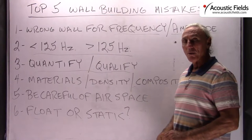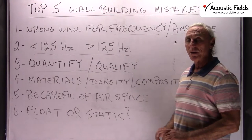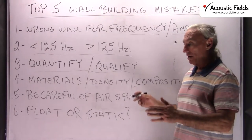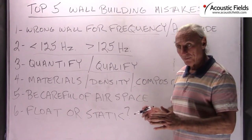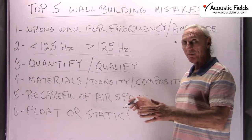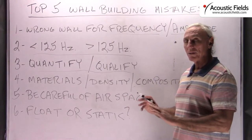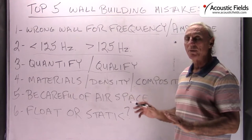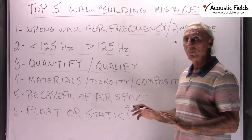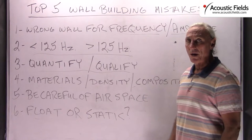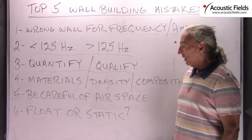A lot of wall construction methods you see in the literature — double drywall, green glue, air space — are a waste of space. There are much better, much easier ways to achieve the same or higher STC values.